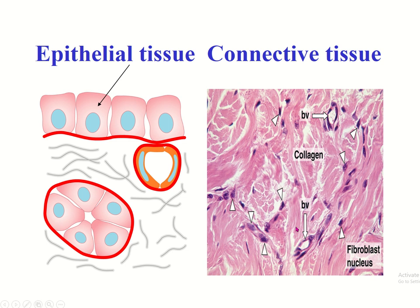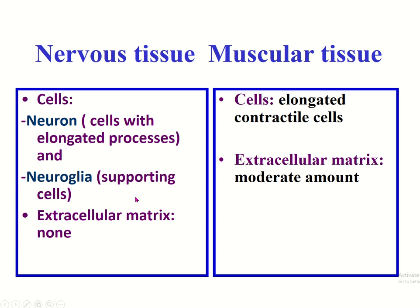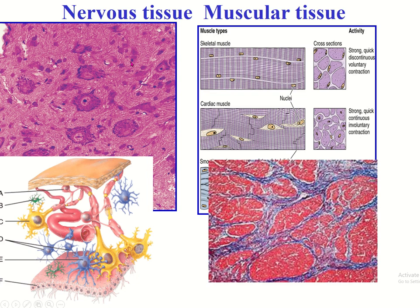Nervous tissue is formed by two types of cells: neurons and neuroglia. The extracellular matrix is absent in nervous tissue. Muscular tissue is formed by a special type of cell called the contractile cell, which has the ability to contract and relax, and this tissue contains a moderate amount of extracellular matrix.